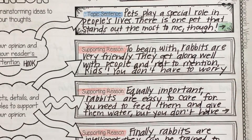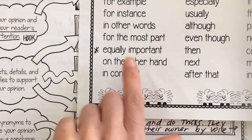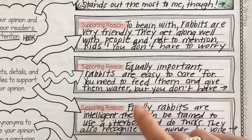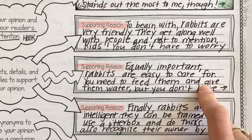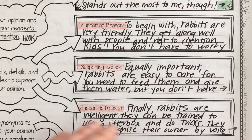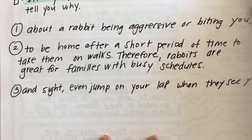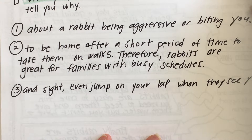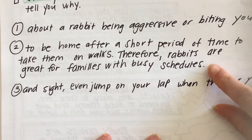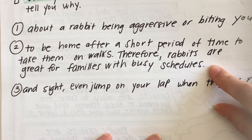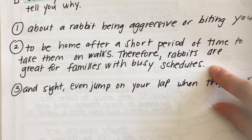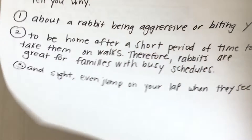Next, I chose a new word instead of 'second' — I chose 'equally important.' I wrote: 'Equally important, rabbits are easy to care for.' I didn't just stop there because readers might ask what makes them so easy to care for. So I added: 'You need to feed them and give them water, but you don't have to be home after a short period of time to take them on walks. Therefore, rabbits are great for families with busy schedules.' A lot of people can't have a dog because you have to be home with them and take them out often.